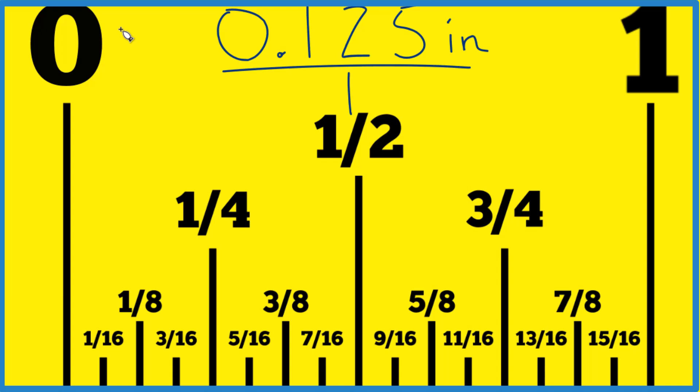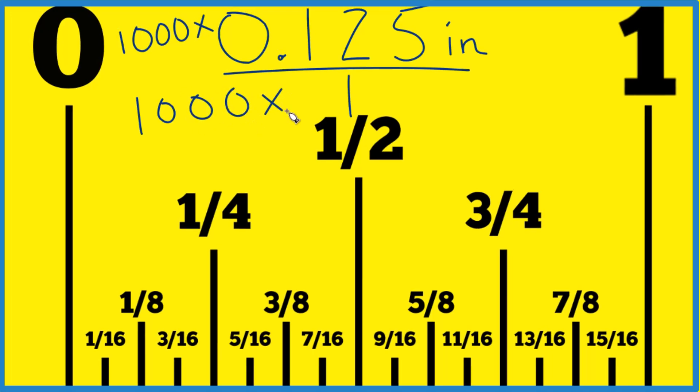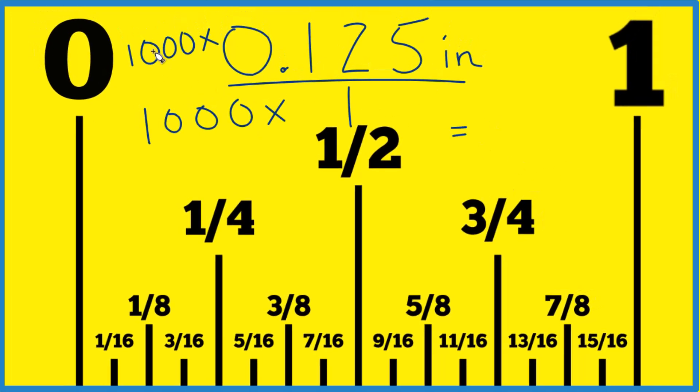So if we multiply this by 1,000 here, that'll get rid of the decimal point. But we also need to multiply the denominator by 1,000. So now when we multiply 1,000 times 0.125, that gives us 125. And then 1,000 times 1, that's 1,000.